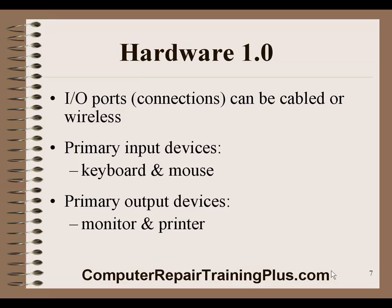I/O ports are connections, and these connections can be cabled to the back of the computer, or even to the front, or we could have wireless input-output. A lot of things are now wireless — laptops are wireless. The primary input devices are the keyboard and mouse, because we're inputting information primarily through our keyboard or through the mouse by selecting things on the desktop. The output devices are the monitor and printer — those are the primary devices.